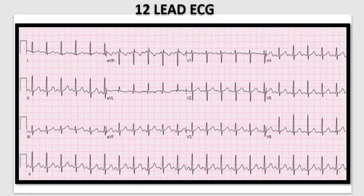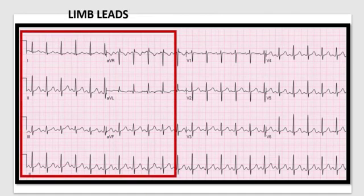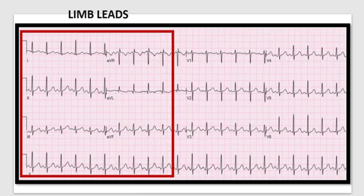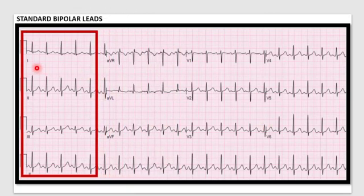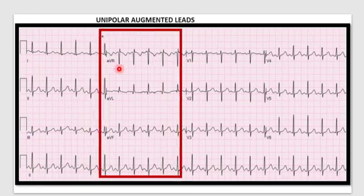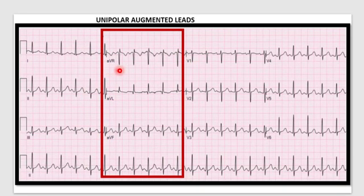The leads can be subdivided into two groups. The leads on the left-hand side are called limb leads: 1, 2, 3, AVR, AVL, and AVF. They are subcategorized as three standard bipolar limb leads — 1, 2, and 3 — and three augmented unipolar limb leads — AVR, AVL, and AVF.